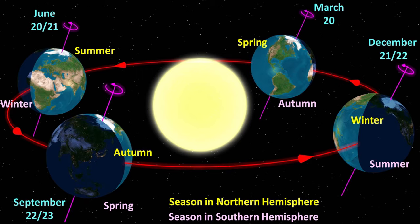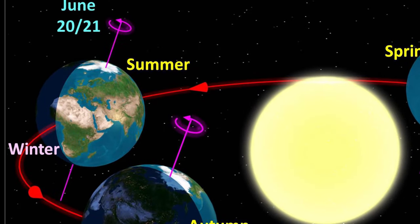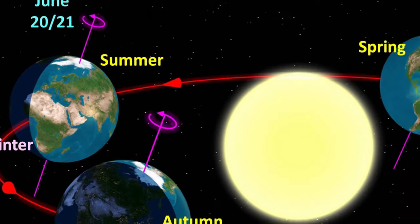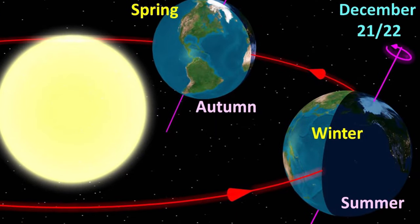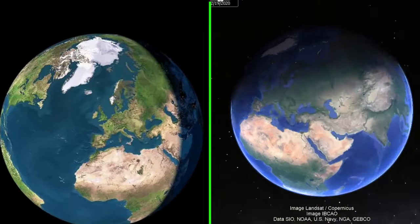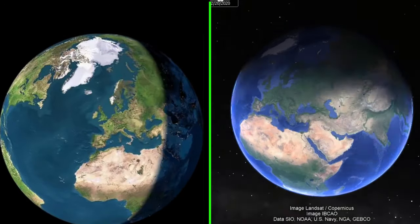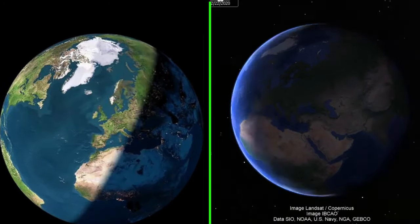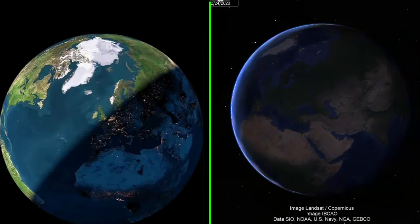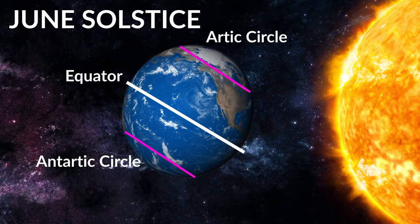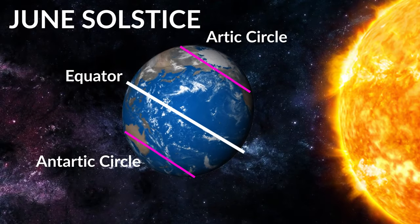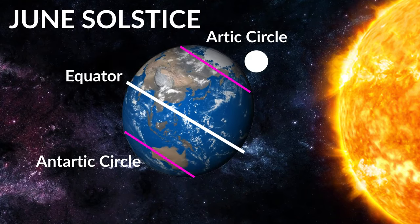This is the Antarctic Circle. At the Arctic Circle, it will be winter. We have the difference between the Arctic Circle. This is the June Solstice. During the Arctic Circle, the sun behaves differently.